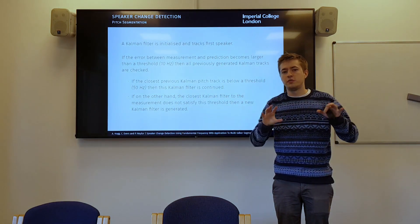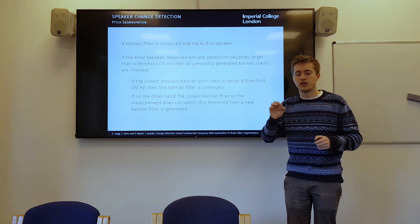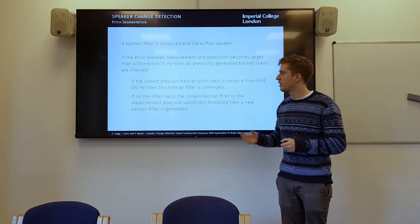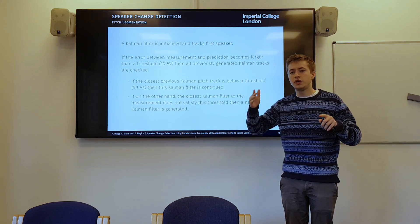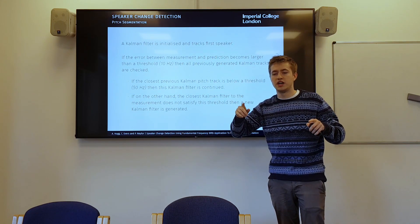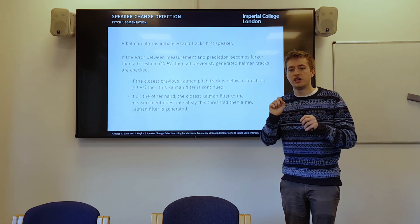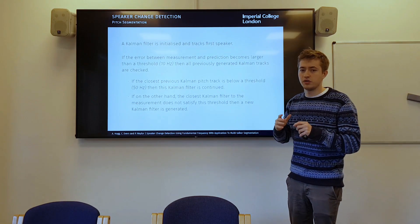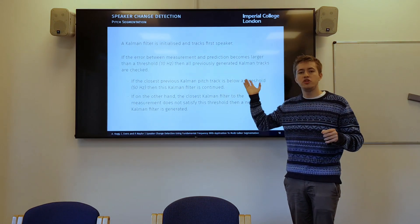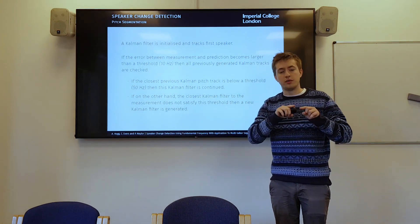Now obviously we have multiple speakers, so we don't just want one Kalman filter tracking all these multiple speakers. We want a different Kalman filter for each different speaker. So how do we actually do that? Well, we start off by tracking the first speaker. As soon as we identify a big jump in the pitch and a large error in the pitch, then we want to assume that a speaker change has occurred. We couldn't accurately predict the future pitch of that speaker. So it's probably a new speaker. So we start a new Kalman filter.